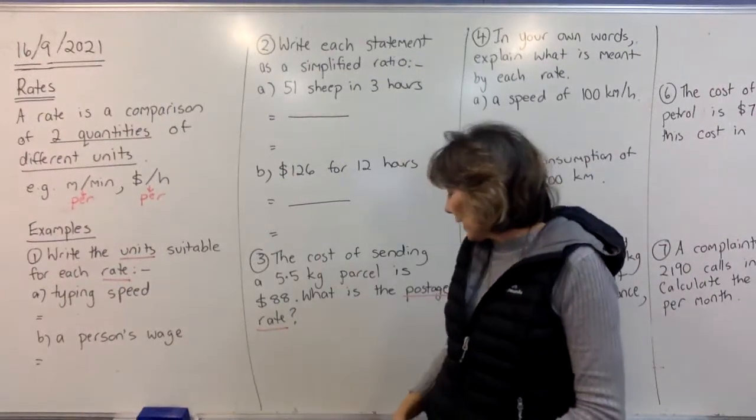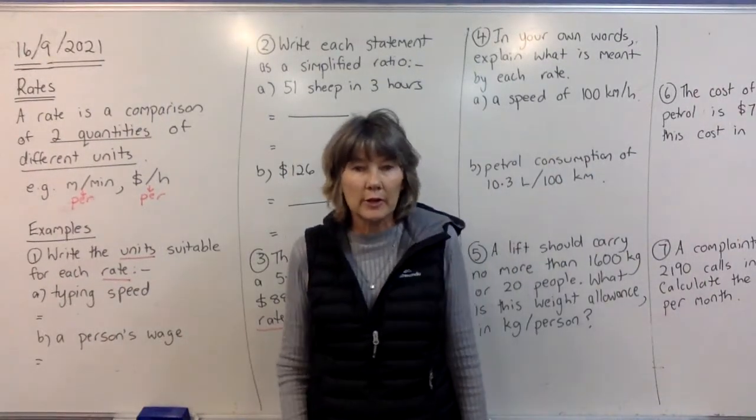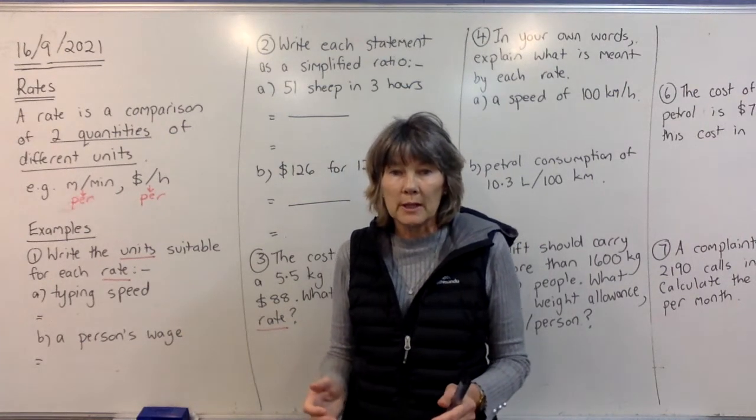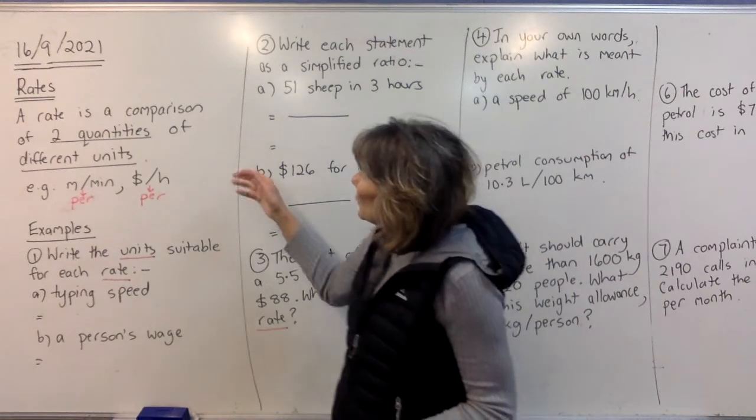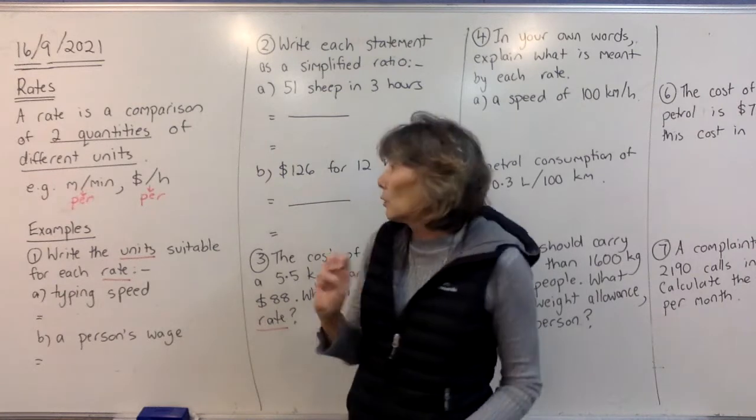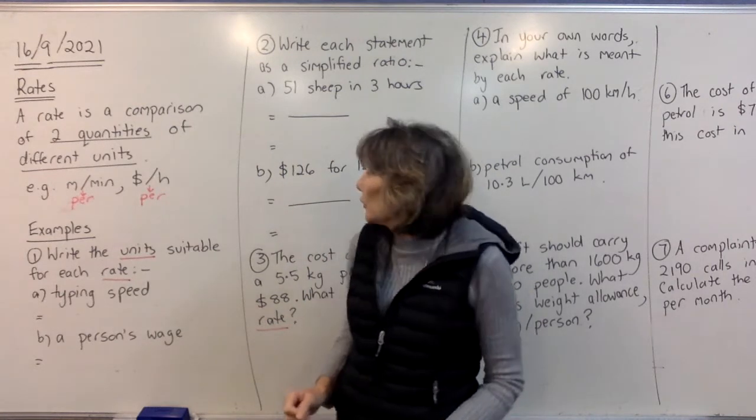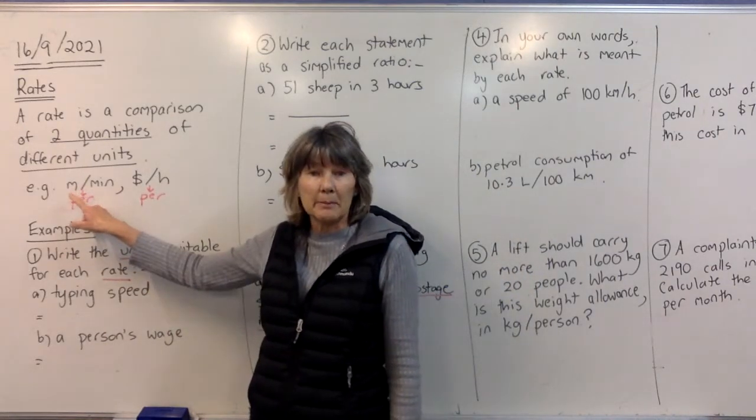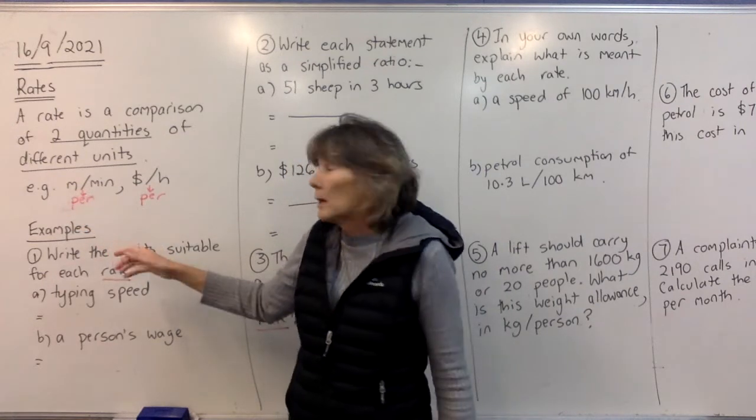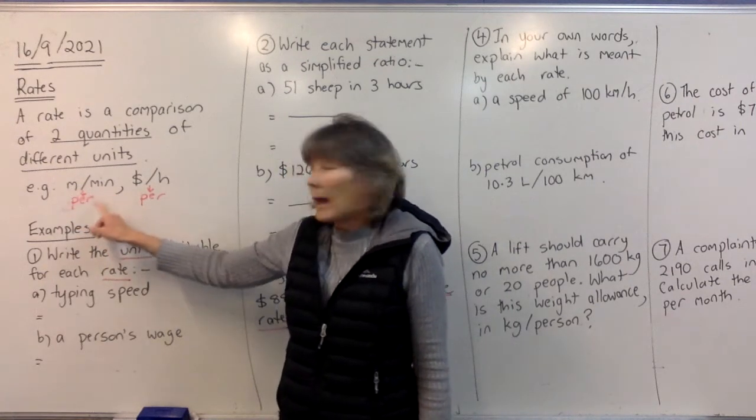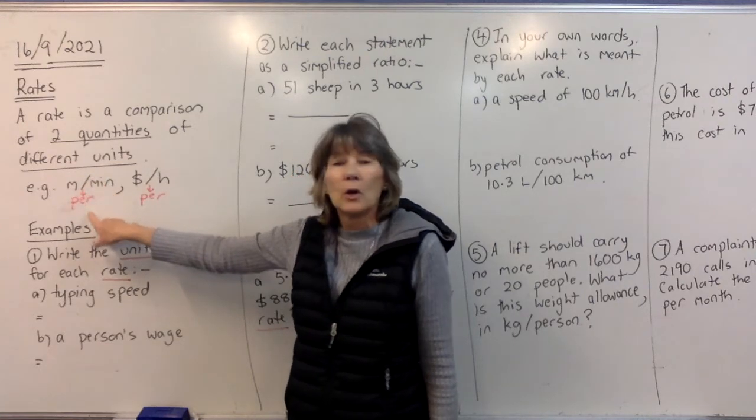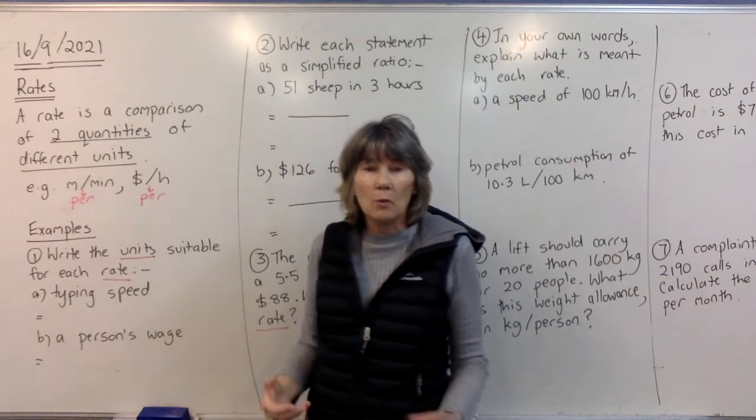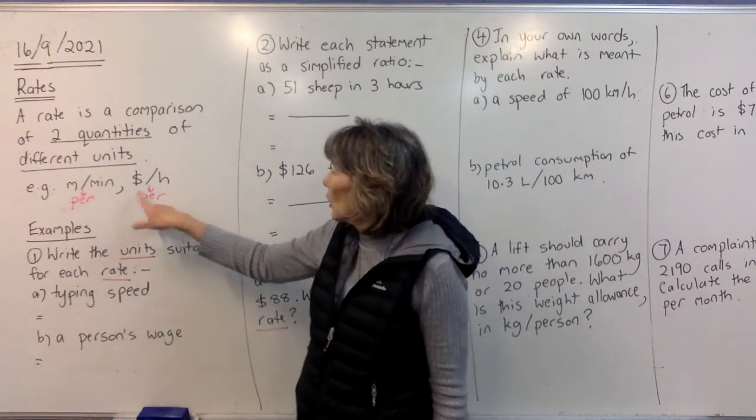All right, so today we're talking about rates, and a rate is very different to a ratio. So remember with a ratio we're comparing two or more quantities with the same units. But with rates, we're comparing only two quantities, and they do have different units, and they can be measuring completely different things. So metres per minute, metres is a measure of distance, and minutes is a measure of time. Now, completely different, and we have in the middle here a slash, which is per. All right, so that's metres per minute. We'll explain what that means as we're going on, and this one is dollars per hour.